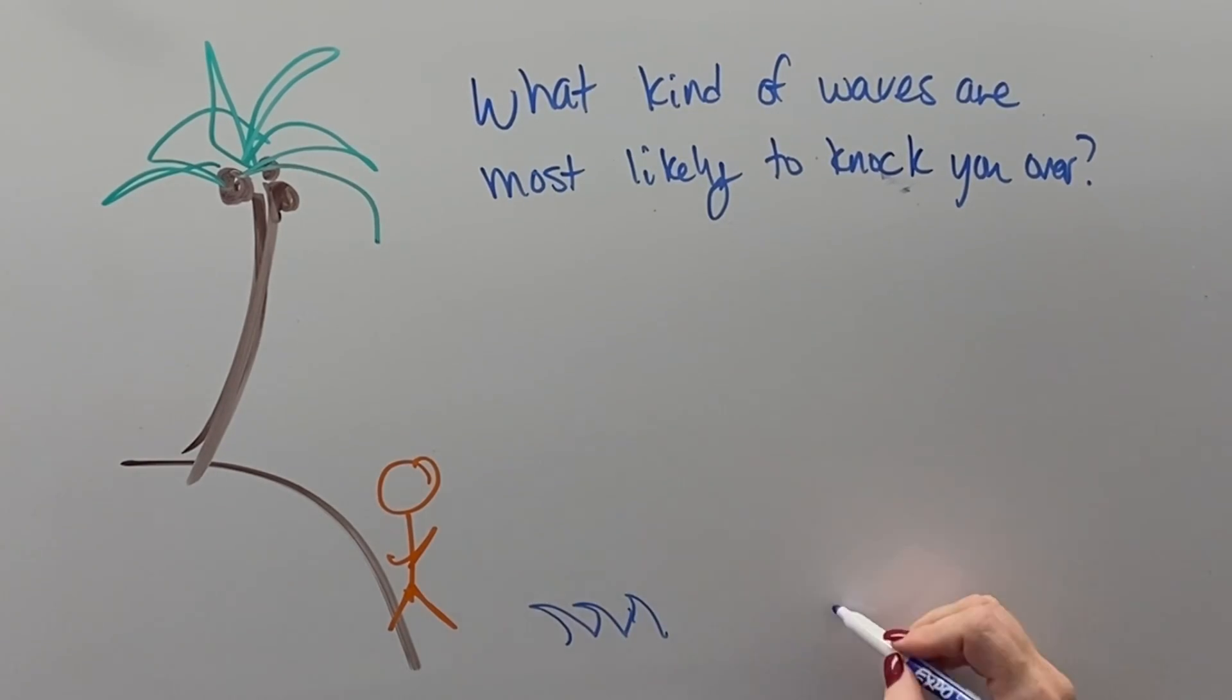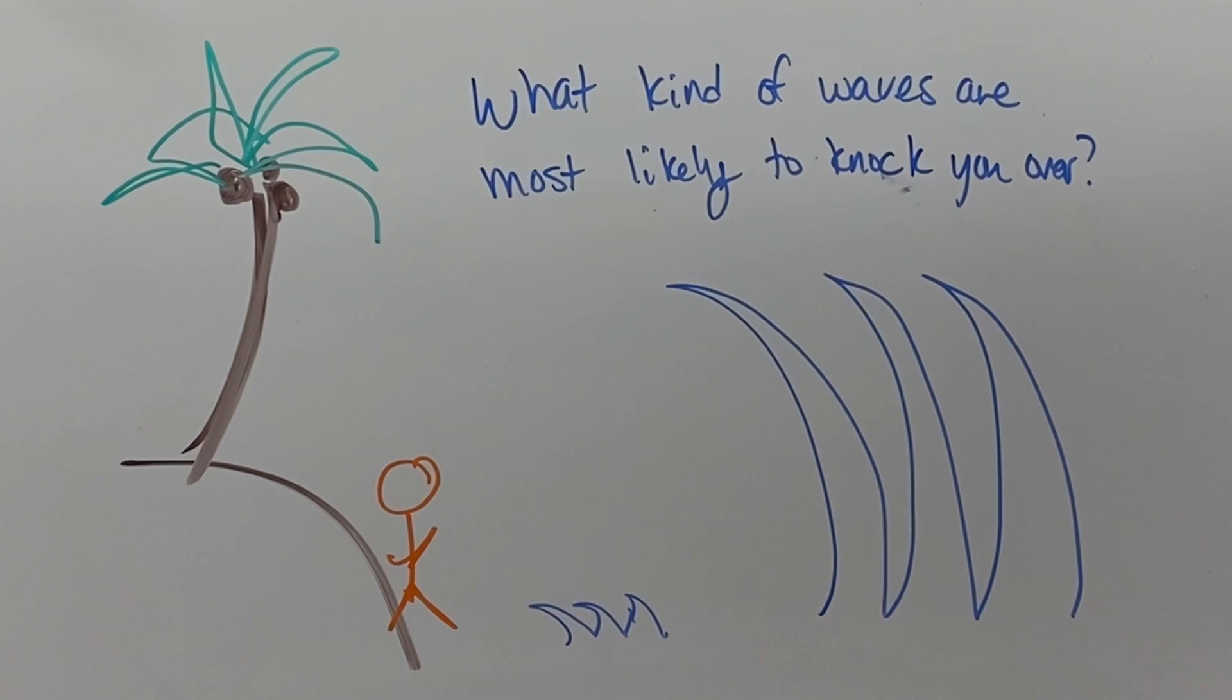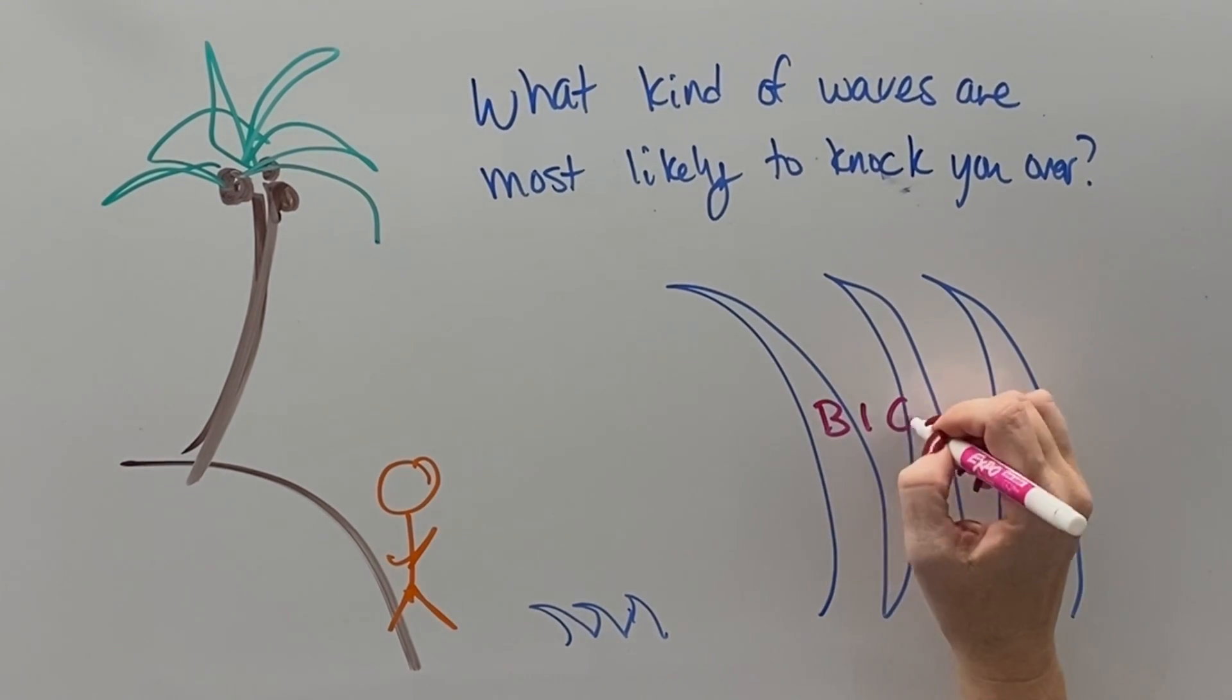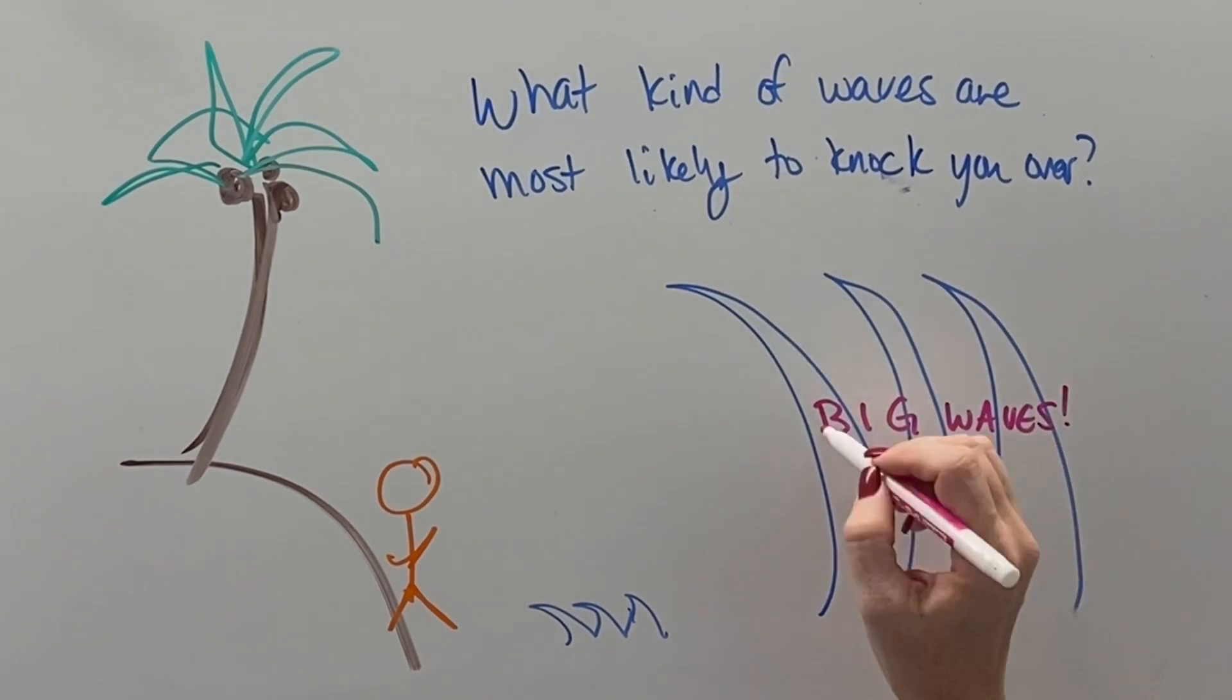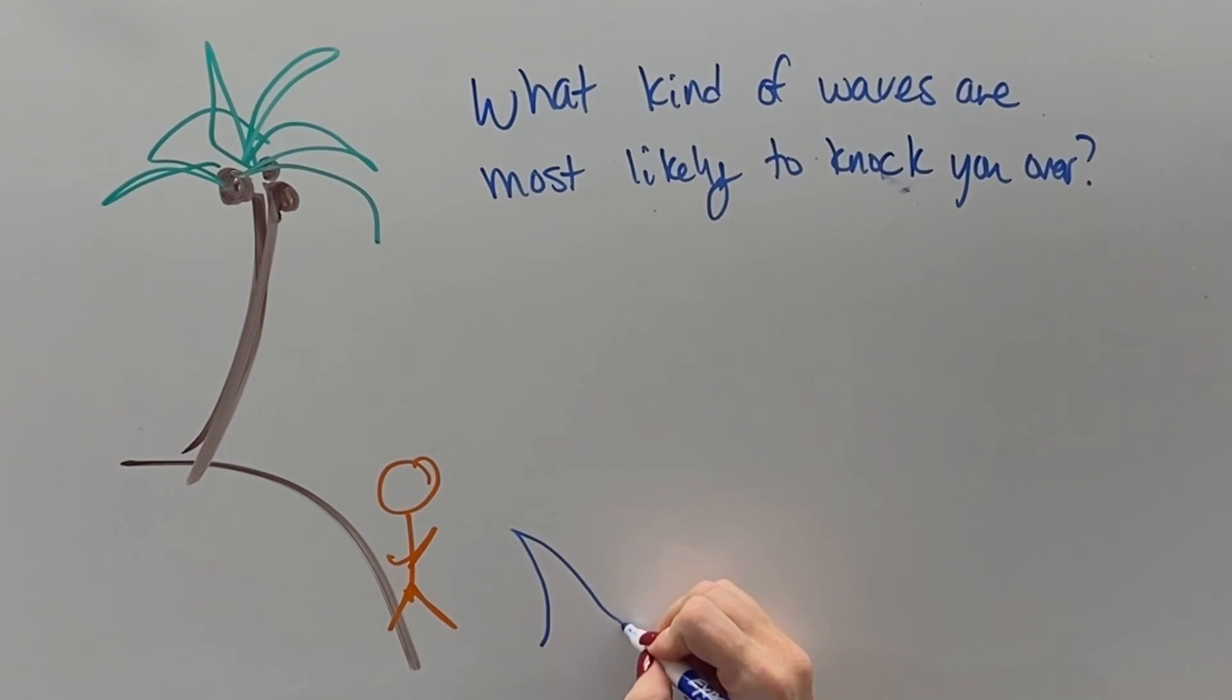So for our final thing about waves, let's go to the beach and let's say you're standing there and you have these two different sets of waves coming at you. Which one's likely to knock you over? Of course, the big or tall waves would be more likely to knock you over.